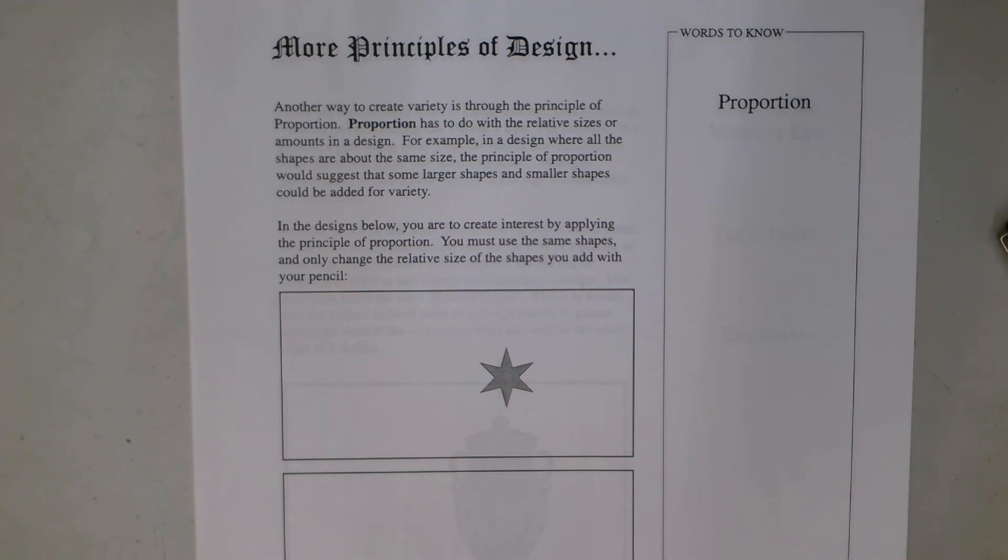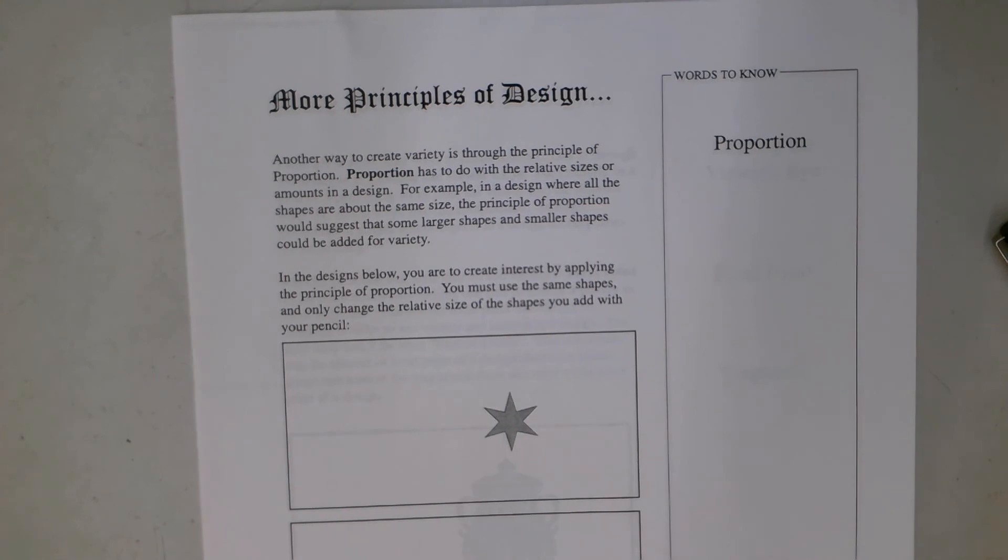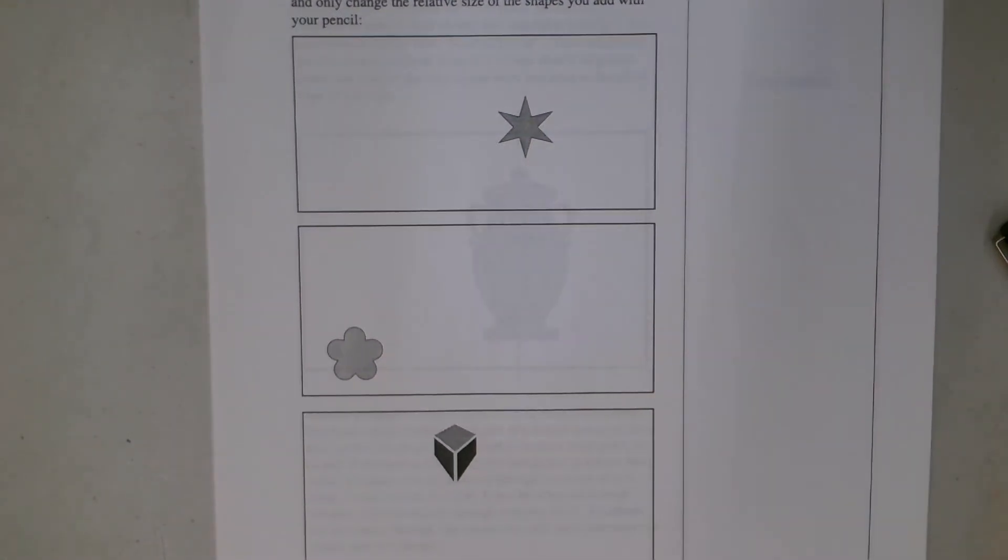Proportion is one of our vocabulary words and has to do with the relative size and amounts in a design. For example, in a design where all the shapes are about the same size, the principle of proportion would suggest that some larger shapes and smaller shapes could be added for variety. In the design below, you will create interest by applying the principle of proportion. You must use the same shapes and only change the relative size of the shapes with your pencil.